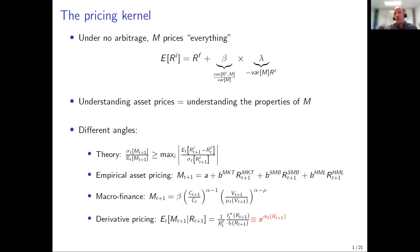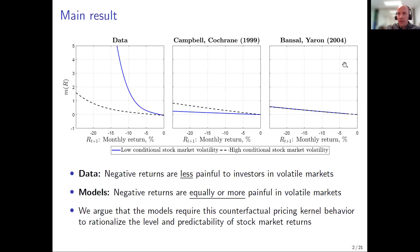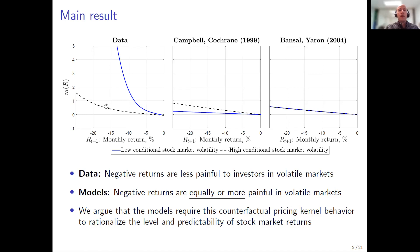Here is our main finding in one slide. I plot the projected pricing kernel — m(r), the log of the projected pricing kernel as a function of monthly stock market returns — for two separate estimates: medians for periods where volatility is very high versus very low. When stock market volatility is very low, the pricing kernel is very steep as a function of returns; when volatility is very high, the pricing kernel is very flat.